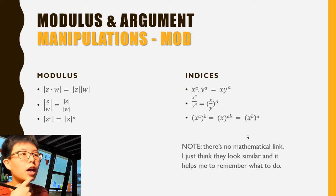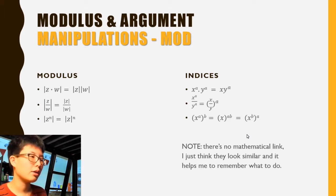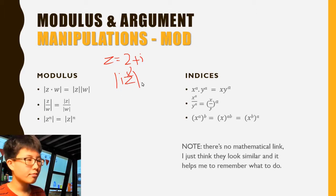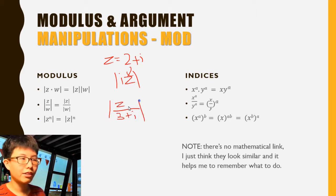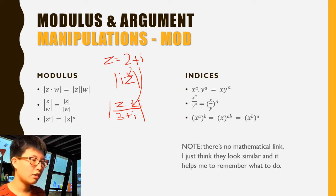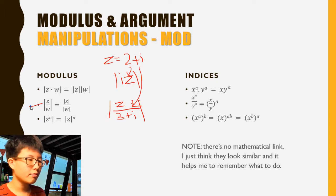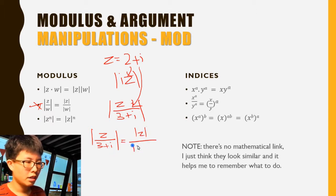This next bit — manipulations with modulus and argument — is very useful. For example, if z = 2 + i and you need to calculate modulus of some expression, instead of substituting it all in and dividing, you can split it apart. For something more complex, you can split the expression and calculate the modulus of each part individually, then divide.